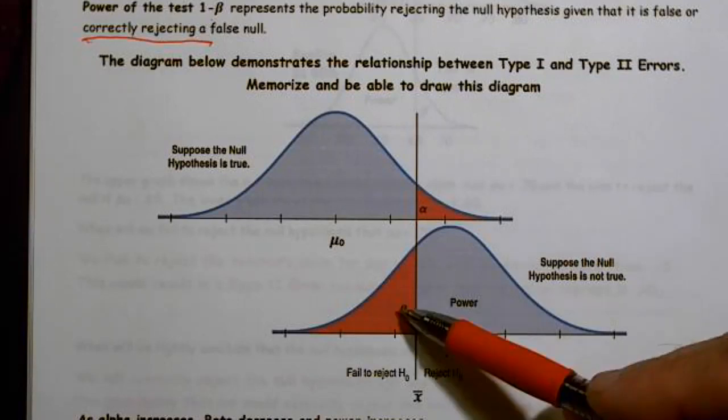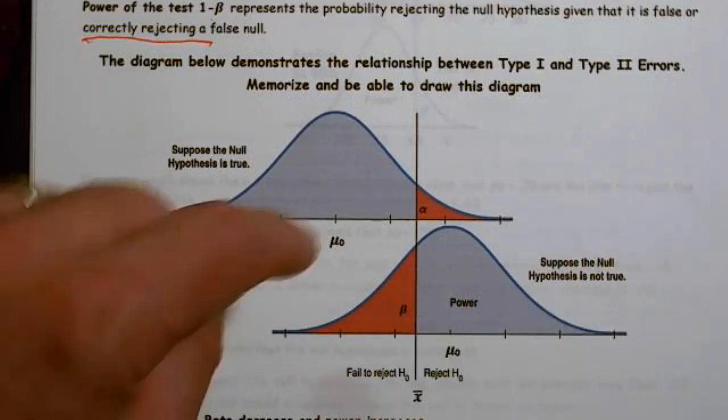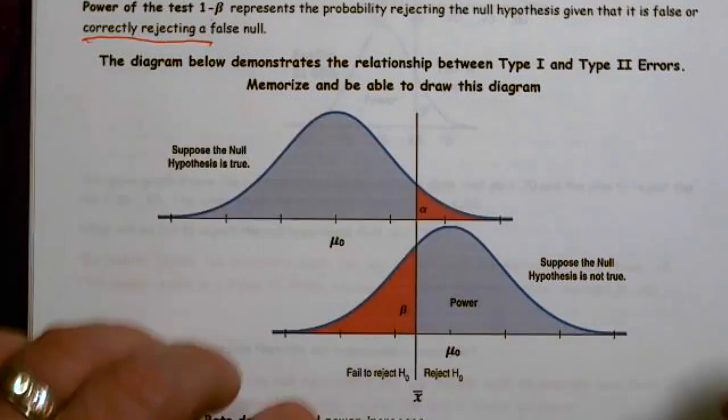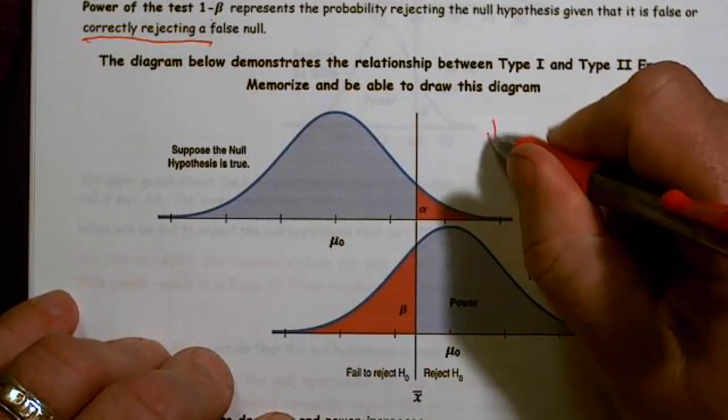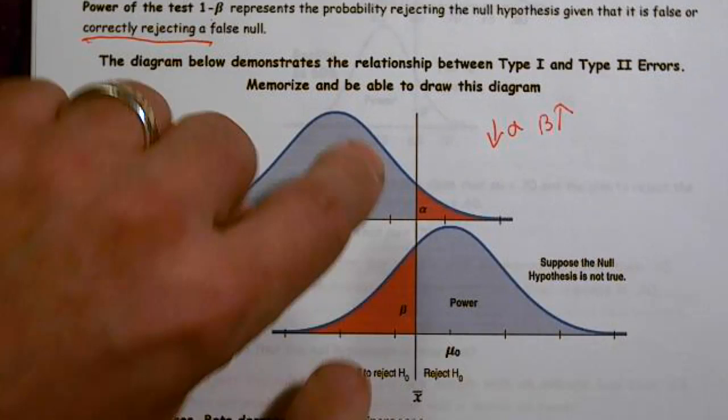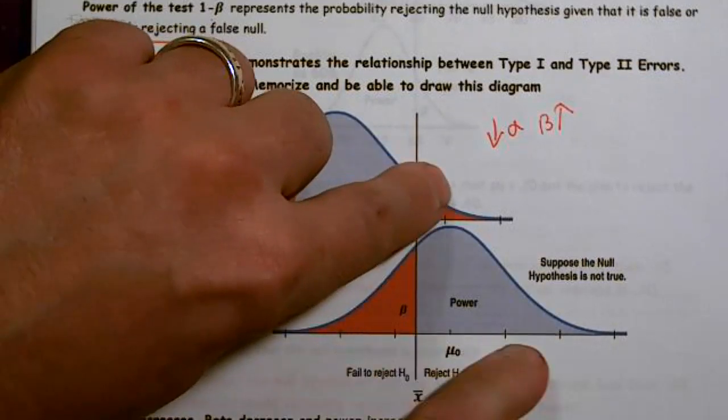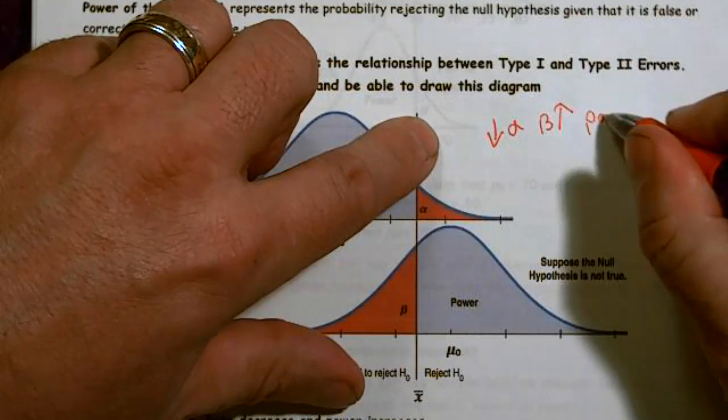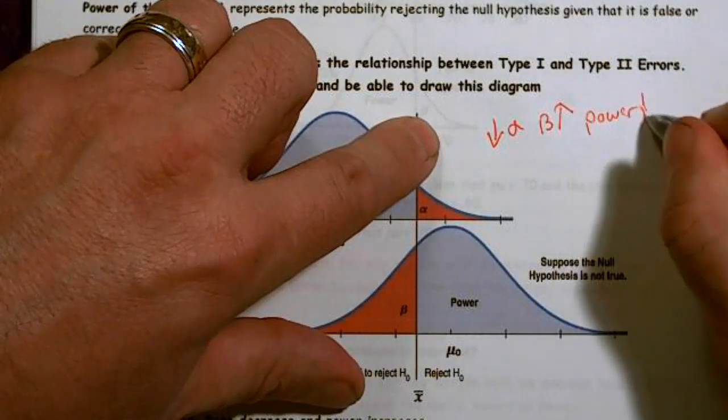If I know alpha, I don't know what beta is, but I know that if I decrease alpha, beta goes up. We also know that as I decrease alpha, power goes down.